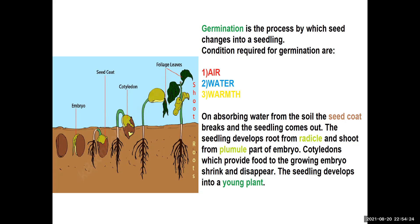The seedling develops root from the radicle, which grows downwards, and the shoot from plumule, part of the embryo, which grows upwards.